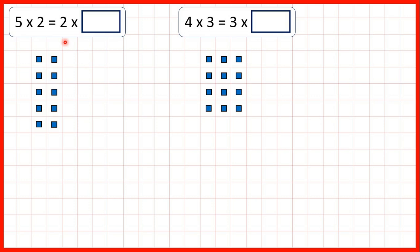It's important to understand that we can multiply numbers in any order. 5 times 2 is the same or equal to 2 times 5. 5 times 2 is 10, and 2 times 5 is 10 as well.